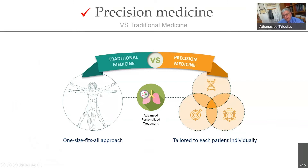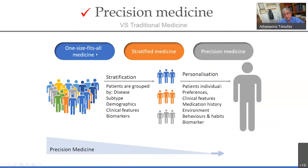There is a crude difference between traditional medicine, in which one size fits all — for example, pneumonia is treated almost the same for everybody — and precision medicine, where treatment is tailored to each patient individually. We are now in stratified medicine, where patients are grouped by disease subtypes, demographics, clinical features, and biomarkers, and moving fast towards personalization, taking into consideration individual preferences, medication histories, environment, behaviors, and habits.